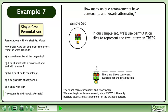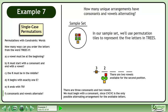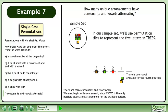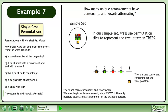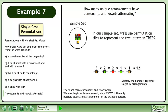There are three consonants available for the first position, two vowels available for the second position, two consonants available for the third position, one vowel available for the fourth position, and one consonant remaining for the final position. Multiply the numbers together to get twelve arrangements.